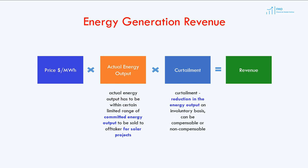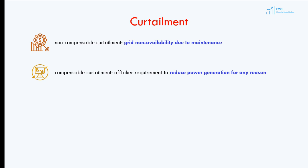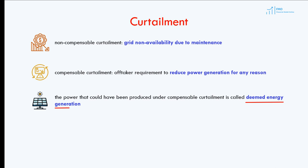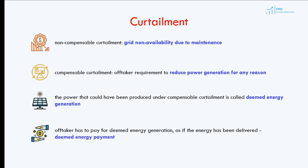Curtailment is a reduction in energy output on an involuntary basis, and it can be compensable or non-compensable. Non-compensable curtailment happens due to events outside the control of both the off-taker and the energy seller — a typical example is power transmission grid unavailability due to maintenance. A compensable curtailment happens because of the off-taker — it is when the off-taker cannot take power for reasons other than non-compensable curtailment. The energy that could have been produced under a compensable curtailment is called deemed energy generation, and the off-taker must pay for it as if the energy had been delivered — this is called a deemed energy payment.